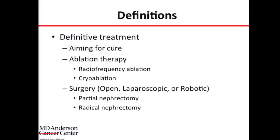The task I've been assigned is to talk about the management of locally recurrent kidney cancer after definitive treatment. This is talking about patients who already received treatment, had the recurrence in the area of the kidney, and now what are we going to do for our patients. Definitive treatment means that the treatment was done with an aim to cure — a patient who comes to clinic with a kidney tumor and is considered curable.